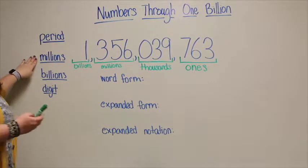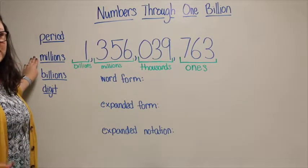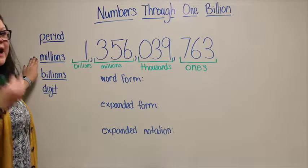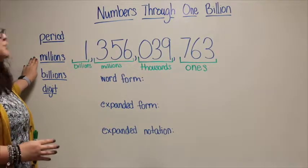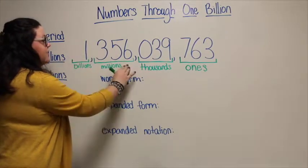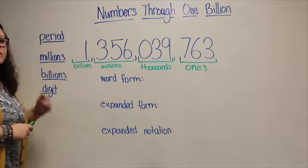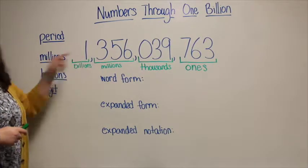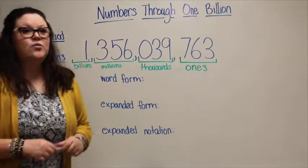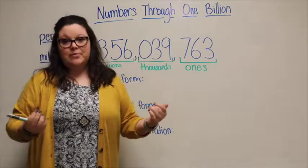We talked about millions — this might be a new word for fourth grade. You might have heard it before, but you might not have added or subtracted within this period. The millions vocabulary word refers to this period of three digits right here. And then billions is the same thing. And digit — it's important to know the difference between digits and numbers.